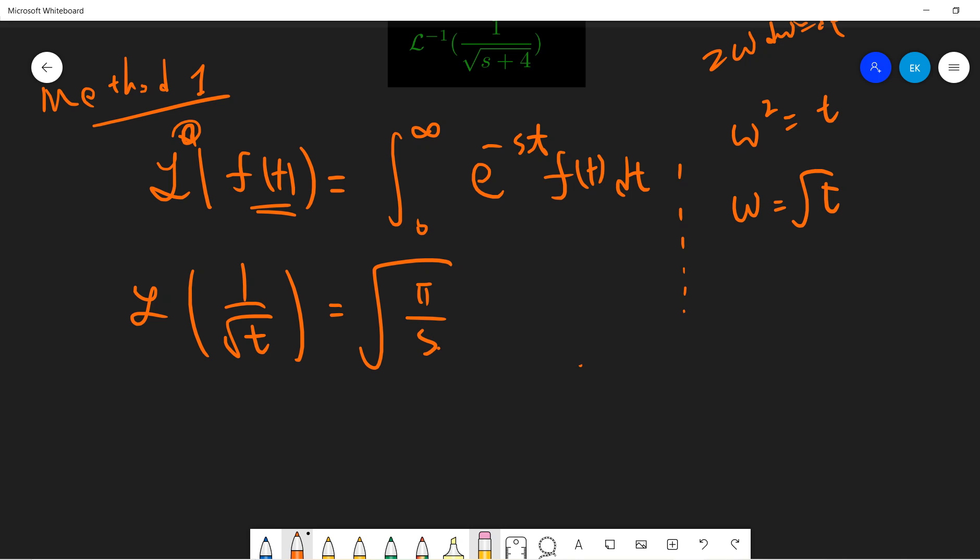Now, we have a shift theorem. We can use the shift theorem. From here, we know that the inverse Laplace transformation of 1 over square root of s will be 1 over square root of pi t. You take the inverse and remove this constant pi.